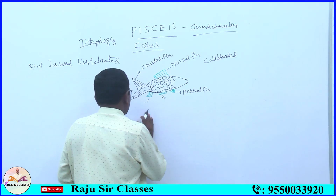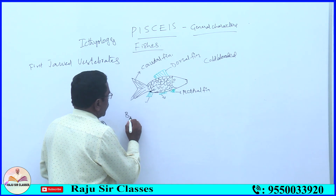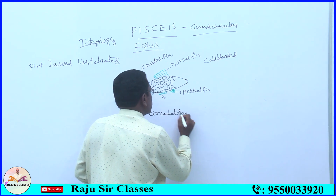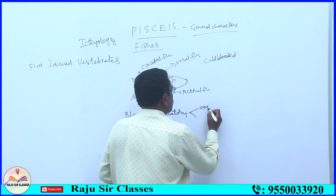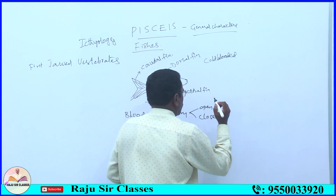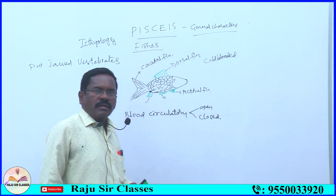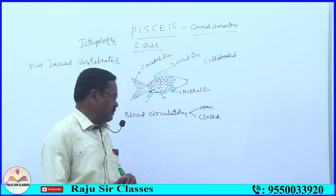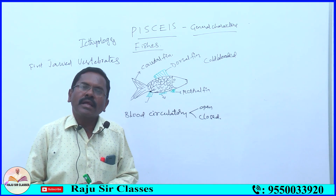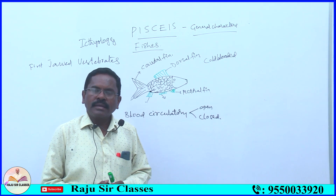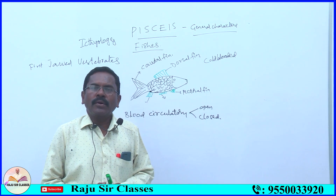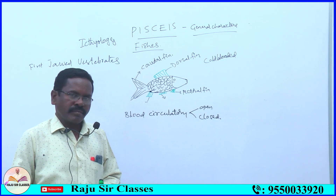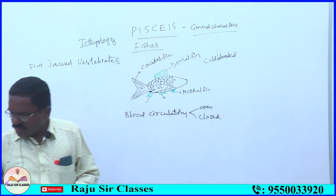Blood circulatory system is of two types: open circulatory system and closed circulatory system. In an open circulatory system, blood vessels are absent and blood flows in blood sinuses or body cavity. In all vertebrates, the type of circulatory system is a closed circulatory system.